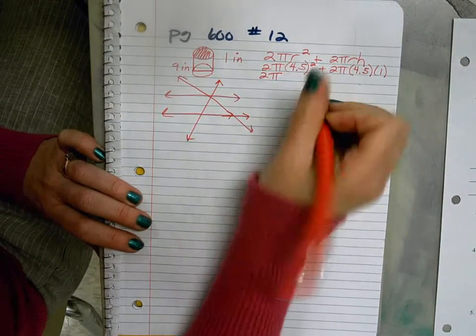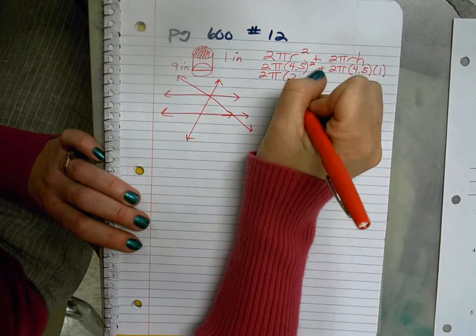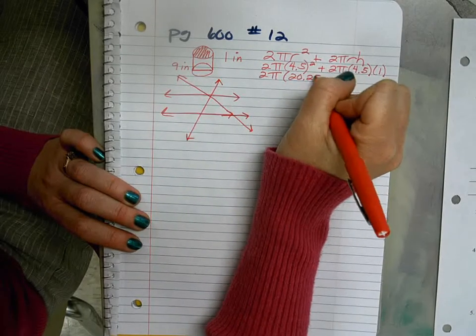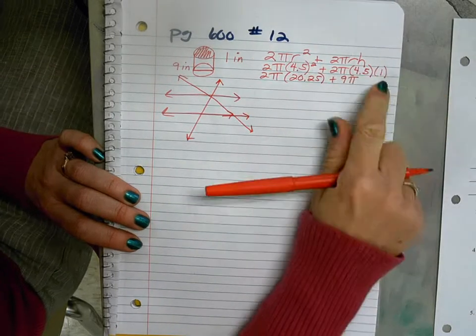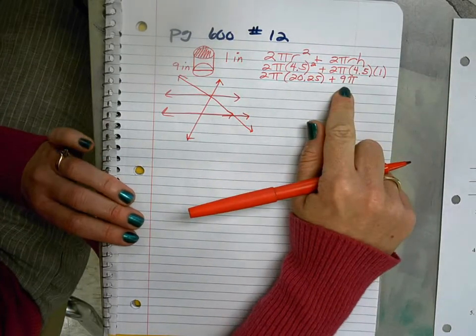I get 2π, and 4.5 times 4.5 is 20.25. Plus 2 times 4.5, we're back to 9, times π times 1. So we just have 9π here.